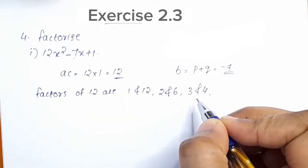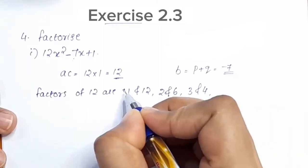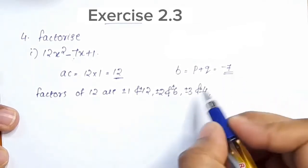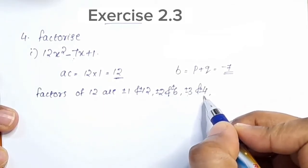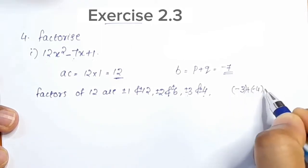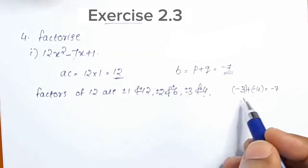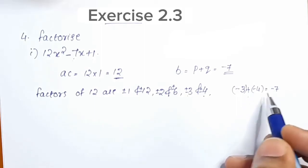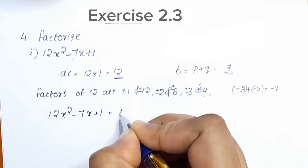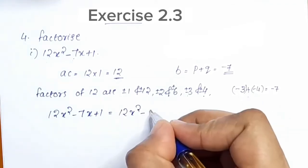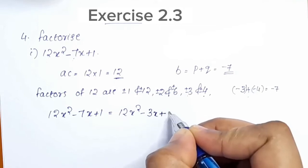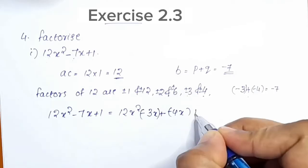The factors are plus or minus 1, plus or minus 2. We need to find two numbers that multiply to 12 and add to negative 7. We use negative 3 and negative 4, because negative 3 plus negative 4 is equal to negative 7.